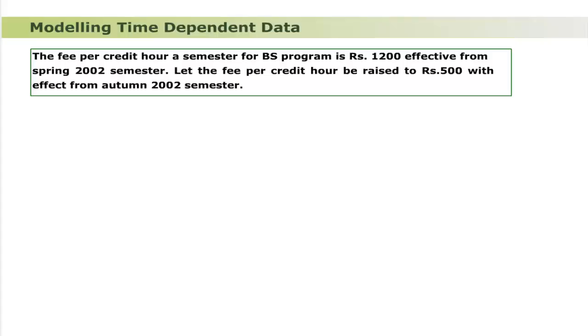Modeling time-dependent data: updating data with the passage of time is frequently required in information systems, and sometimes previous versions of data values are required for future reference. Such data whose values are updated over time and whose history of changes is kept is called time-dependent data. For example, the fee per credit hour for a BS program is Rs. 1200 effective from spring 2002, then raised by Rs. 500 from autumn 2002. A student's fee is calculated at the rate effective at the time of admission, so the fee rate history must be kept. This data item is time-dependent.